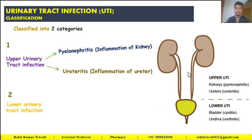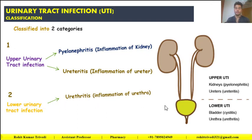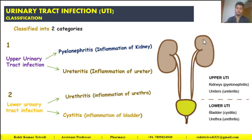The second broad category is lower urinary tract infection, also classified into two types. The first is urethritis — the inflammation of the urethra. The second is cystitis — the inflammation of the urinary bladder where urine is stored. After the kidneys filter and urine passes through the ureters, it is stored in the bladder and ultimately excreted through the urethra.